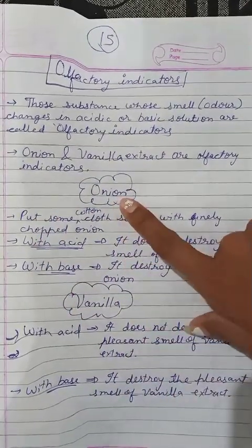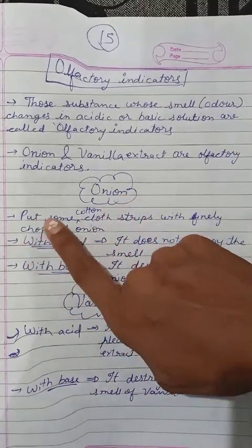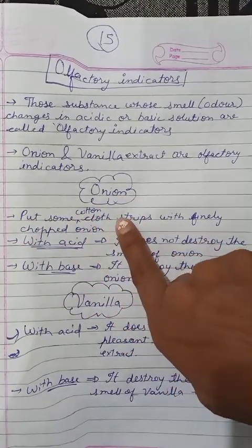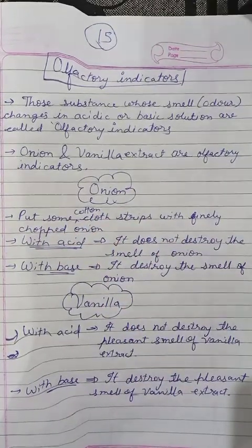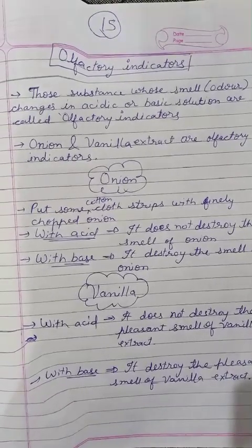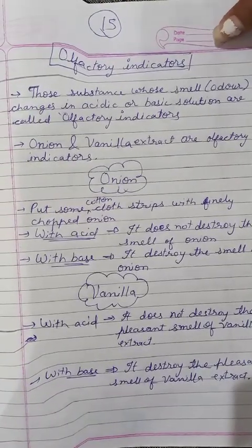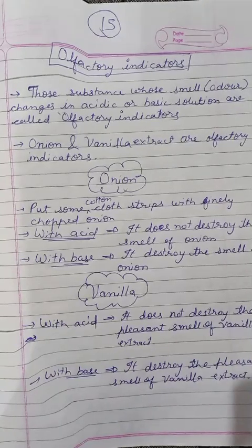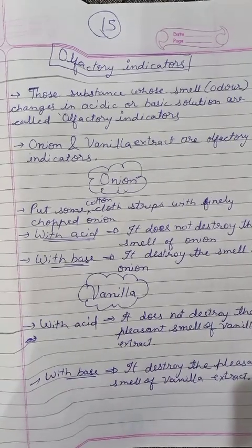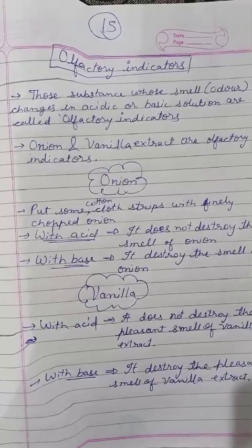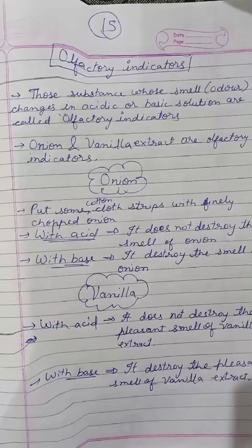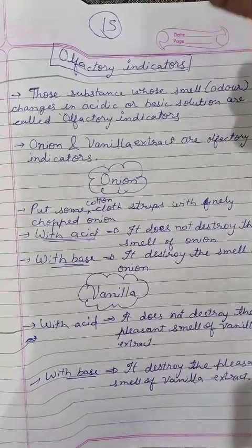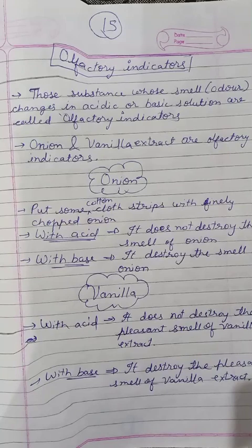First we shall study about onion. We will put cotton cloth strips with finely chopped onion. We cut the onion well and in a plastic bag we put finely chopped onion pieces along with cotton cloth strips. Now we use this like litmus paper — we can use it like a pH strip.